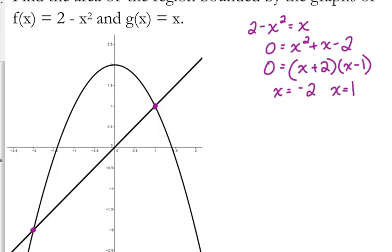So that tells us that we are going to integrate from negative 2 to positive 1, because we are looking for this region right here between the curves, this kind of snow cone-ish looking region. The top function is the parabola. The bottom function is the linear function x.